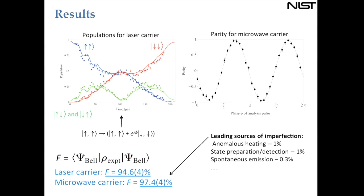In both experiments, anomalous heating plays a significant role — at least a 1% error in fidelity associated with anomalous heating. The ions are about 100 microns from the surface, but still close enough to matter. There are also some state preparation and detection issues. A simulation of the experiment matches the data quite well, and this fidelity value is actually quite high for the particular qubit states used at NIST.